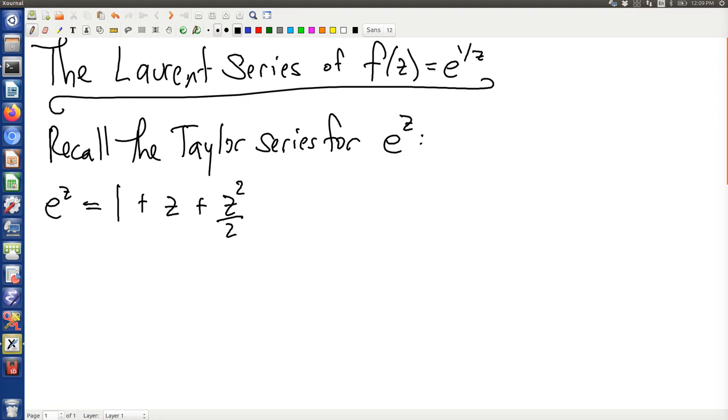squared over 2 plus z cubed over 6 plus many other terms. And the typical nth term has z to the n over n factorial. So that's the Taylor series for e to the z.